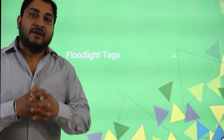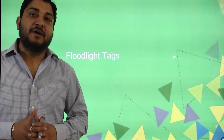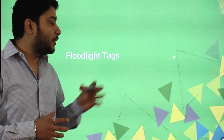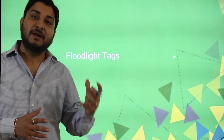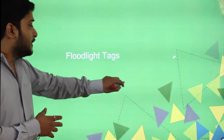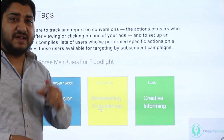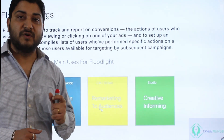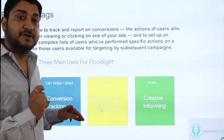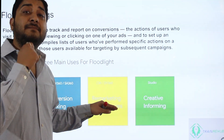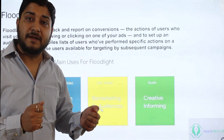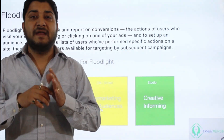We will now start the fourth topic of module 2: floodlight tags. This is a very important part to understand how the reporting mechanism works from the advertiser end. A floodlight tag is a small piece of code that has three functions: first, to track conversions; second, to build a remarketing audience list; and third, creative information.